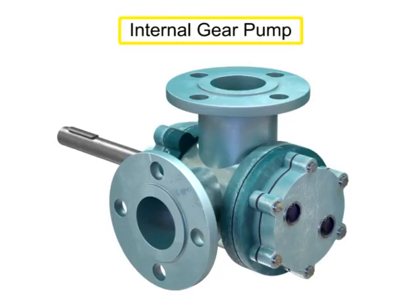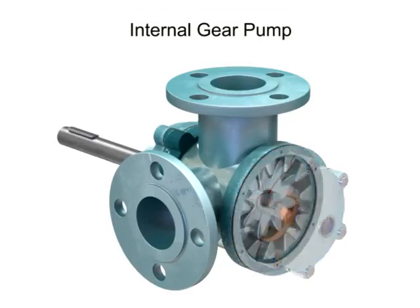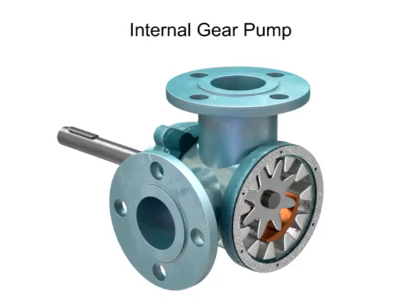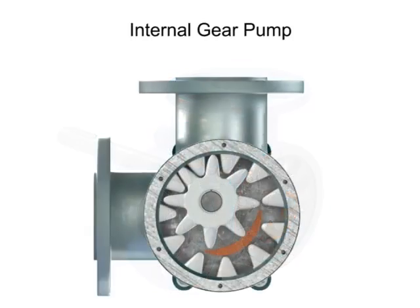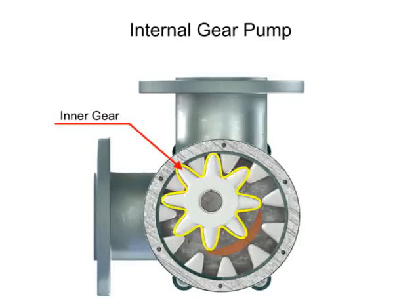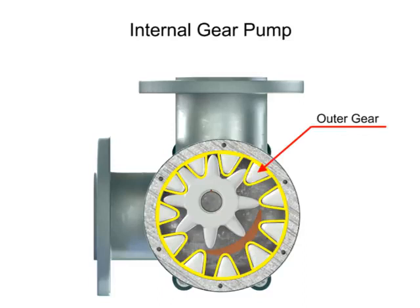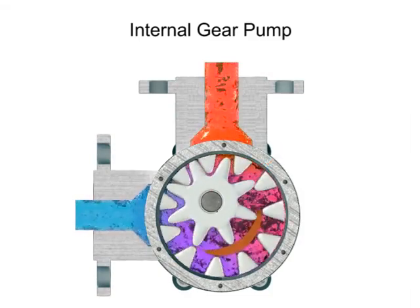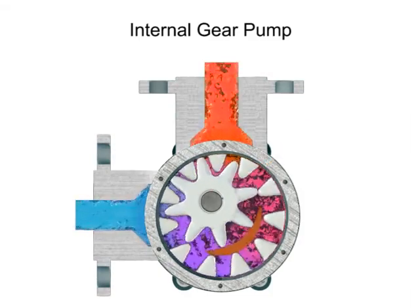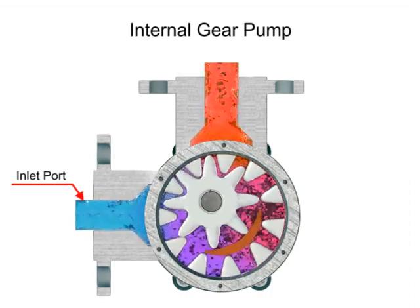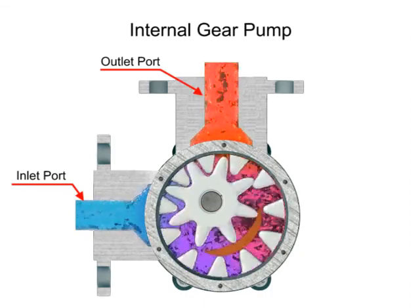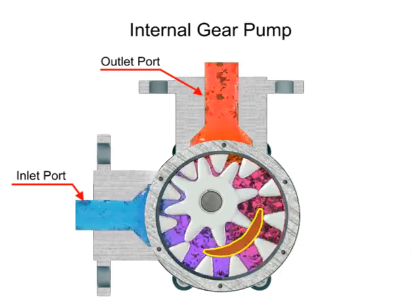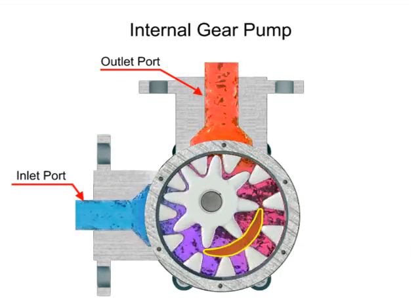Internal gear pumps are exceptionally versatile. This type of pump has one inner gear inside a second outer gear. The inner gear has a shaft driven by a motor and has teeth that protrude outward. The outer gear has teeth that protrude inward toward the center of the pump. As the inner gear rotates, it meshes with and moves the outer gear. Liquid is trapped in the gear spaces and carried from the inlet to the discharge.